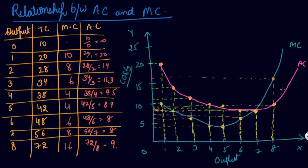Now let's see the relationship between your average cost and the marginal cost curve. Number 1: both AC and MC are calculated from your total cost. This is your total cost, you've calculated your MC and your AC.